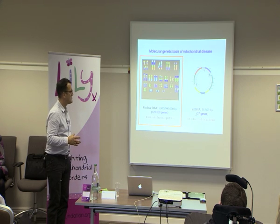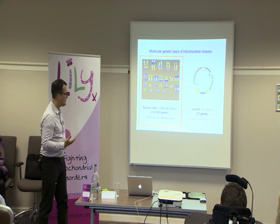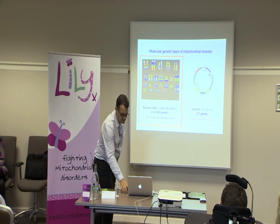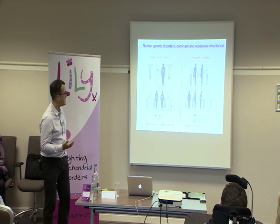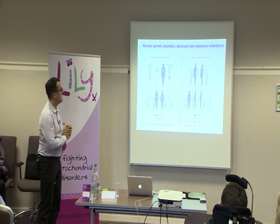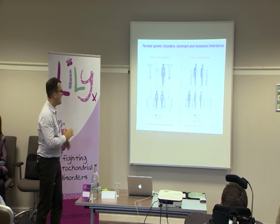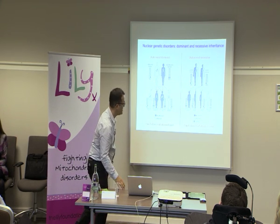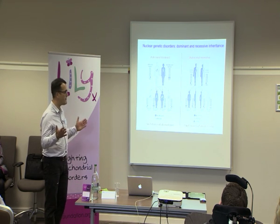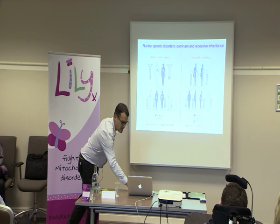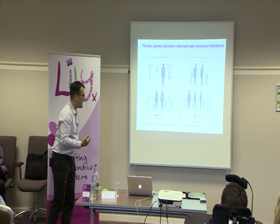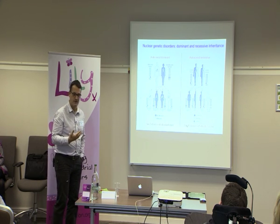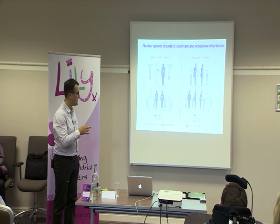Turning to the nuclear contribution to mitochondrial function: the nuclear chromosomes encode around 20,000 genes, of which 1,300 are directly relevant to mitochondrial function. These behave and are transmitted very differently. The two most important modes of transmission are autosomal dominant — where inheritance can come from either parent and only a single copy of an affected gene is required — and recessive inheritance, where both parents are carriers, with a 1-in-4 chance of an affected child carrying mutations from both father and mother.